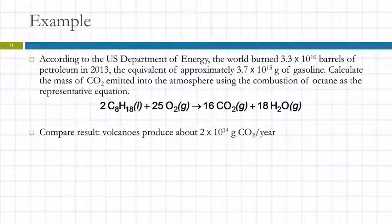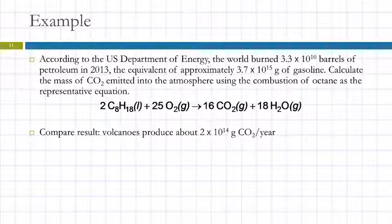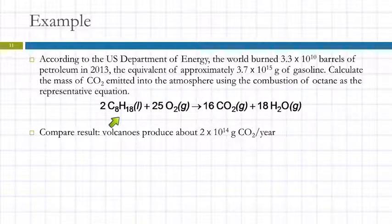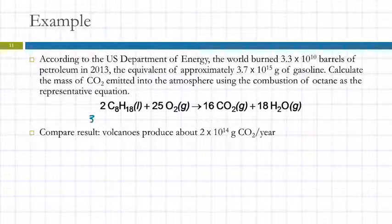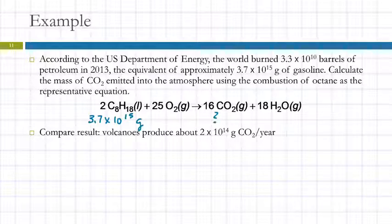I want to pull the important numbers out. The 3.7 times 10 to the 15th grams is the mass of gasoline — we'll assume it's all octane and use this reaction. I'm going to write that under the formula for octane: 3.7 times 10 to the 15th grams. And we're trying to find out how much CO2 in grams. I have a mass of one thing and I'm looking for a mass of another.